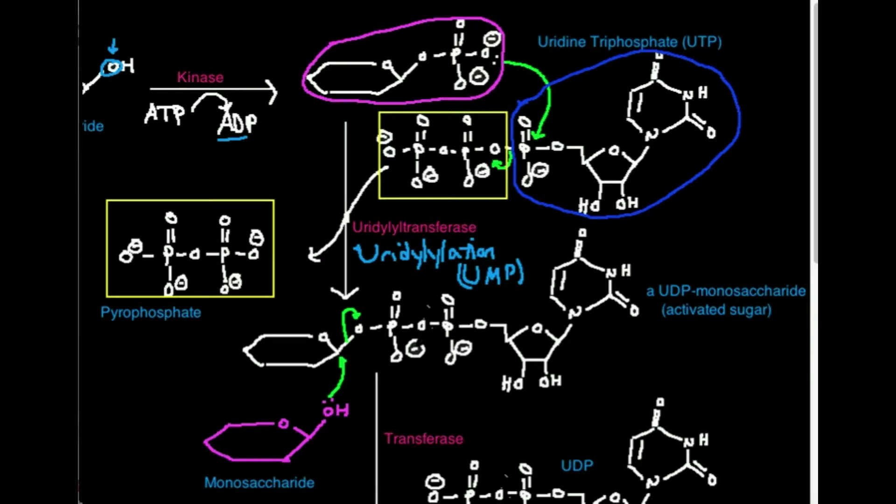You're going to lose pyrophosphate. And you're going to get this molecule down here. And this type of reaction is called a uridylylation reaction because we're transferring a UMP. And the type of enzyme that catalyzes this is called a uridylyltransferase.